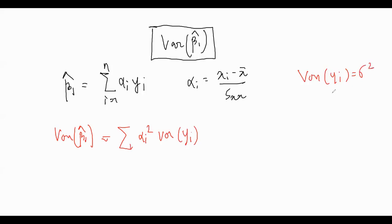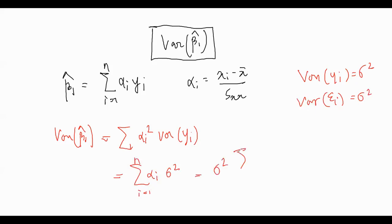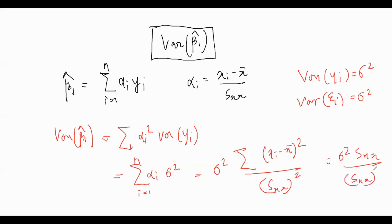The variance of yᵢ is σ², because εᵢ has variance σ² and xᵢ is a constant. So it becomes σ² times summation of (xᵢ minus x̄)² divided by Sₓₓ². Now the numerator summation of (xᵢ minus x̄)² is exactly Sₓₓ, so we get Sₓₓ divided by Sₓₓ². That simplifies to σ² divided by Sₓₓ.